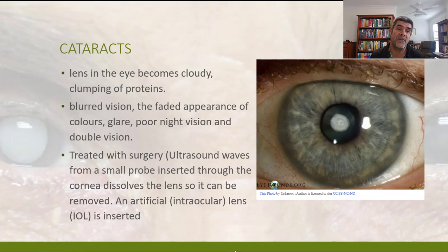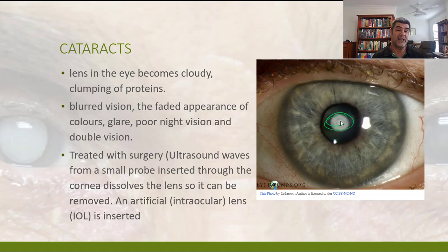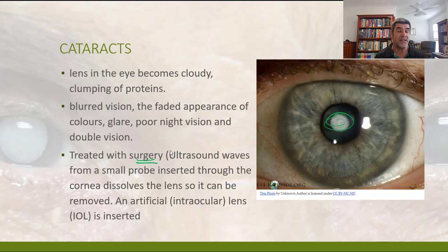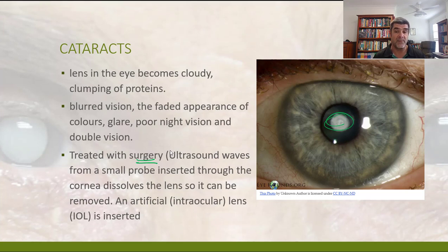Another problem we identified was cataracts — the clumping of proteins in the lens — which leads to blurred vision, fading of colours, and poor night vision. This can be treated with surgery: a small probe is inserted through the cornea and ultrasound waves dissolve the lens so it can be withdrawn. An artificial lens is then inserted in its place. This surgery has high success rates and is a good solution, particularly because severe cataracts can significantly restrict vision.